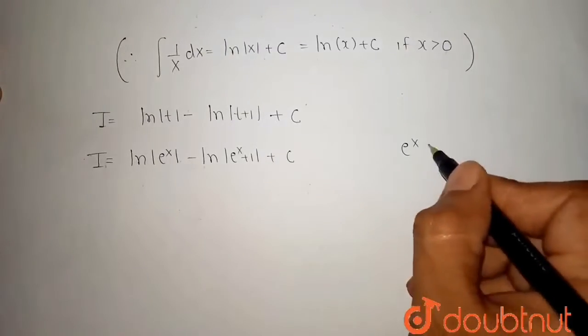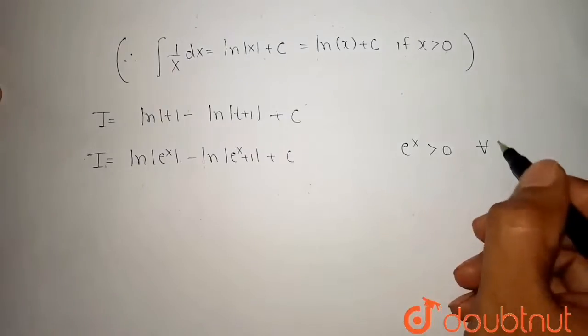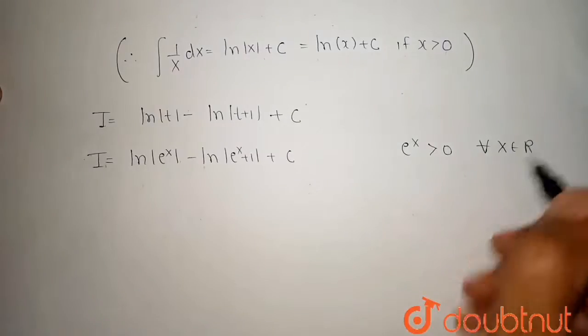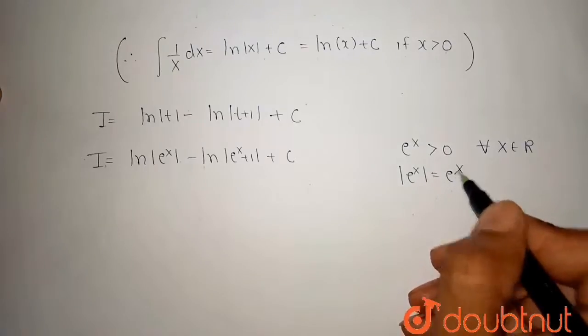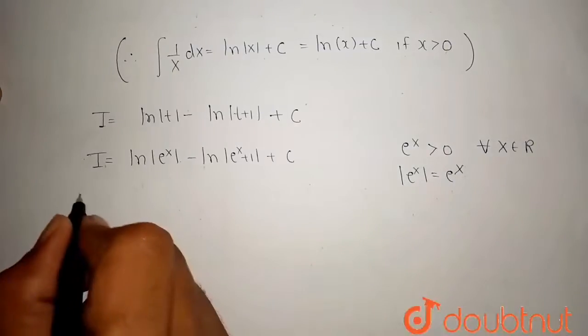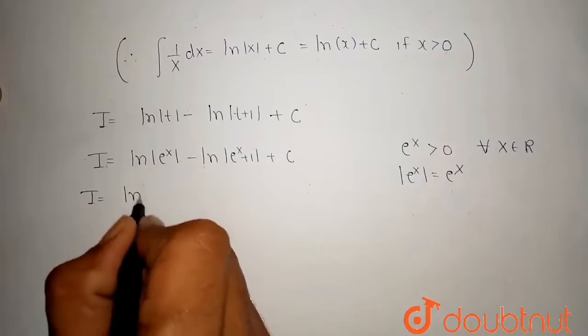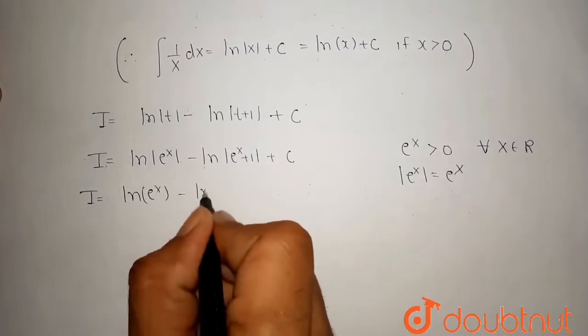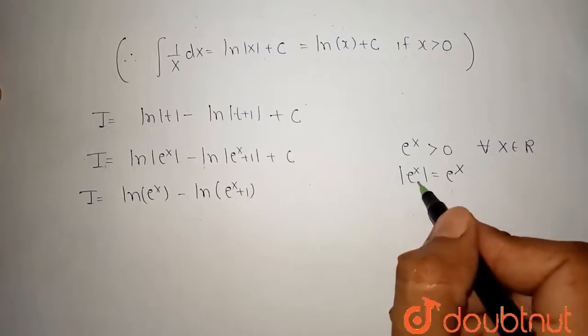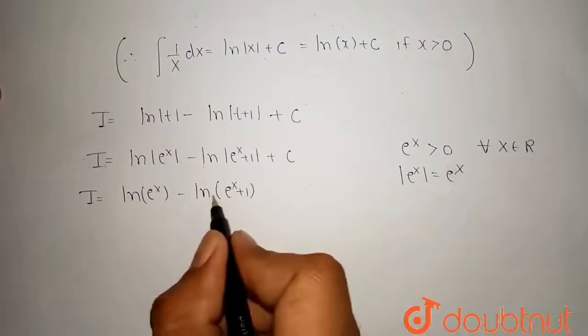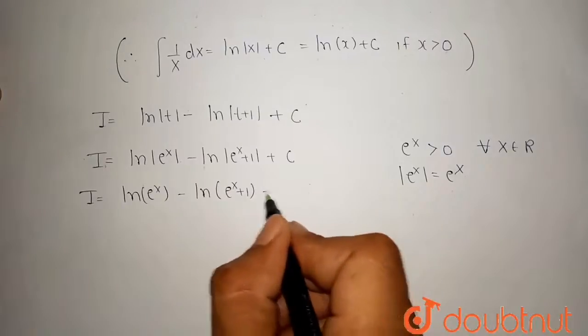Note that e to the power x is always greater than 0 for all x belongs to R. That means the mod of e to the power x is also written as e to the power x. So this term becomes ln of e to the power x minus ln of e to the power x plus 1, because if e to the power x is greater than 0, then e to the power x plus 1 is always greater than 0.